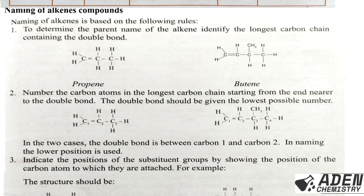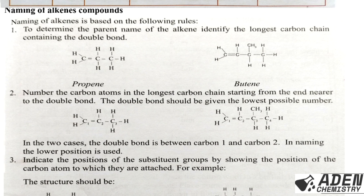Rule 2: Number the carbon atoms in the longest carbon chain starting from the end nearest to the double bond. The double bond should be given the lowest possible number. For example, if the double bond is at one end, we number from that end so the double bond is carbon number 1, not from the other end where it would be carbon number 2 or 3. So for propene, we write 'prop-1-ene'.